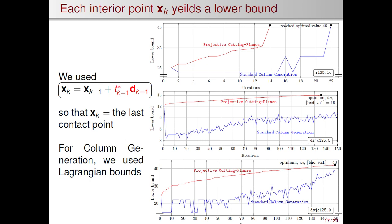Let me compare the evolution of the new method and the old one over the iteration in terms of lower bounds. Each interior point x_k gives a lower bound for the new method. In this experiment, we used a more aggressive definition of x_k. I mean, using this formula, each new interior point is actually the last contact point. The lower bounds of the column generation were computed using the well-known Lagrangian bounds. And this is the difference between the two methods. You may see projective cutting planes is much faster in terms of iteration, even if this is not the case in terms of CPU time.